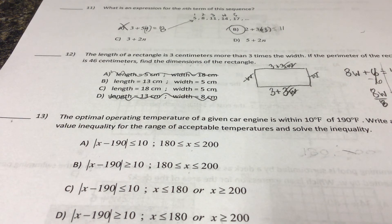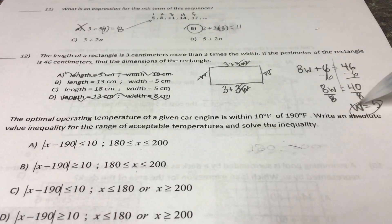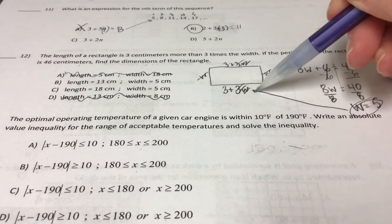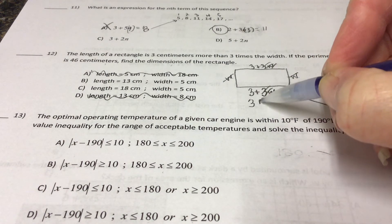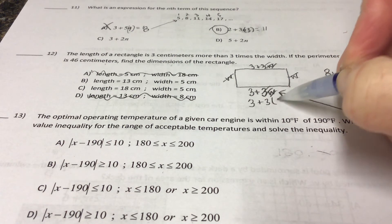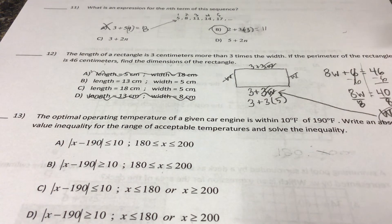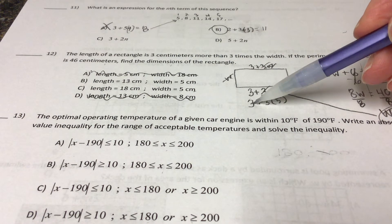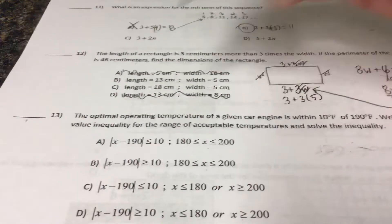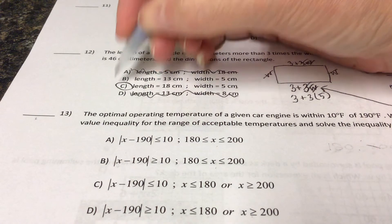What you do with this five then is plug it back into your length piece. Three plus three times five. Three times five is fifteen plus the three would be eighteen, right? Our answer is C.